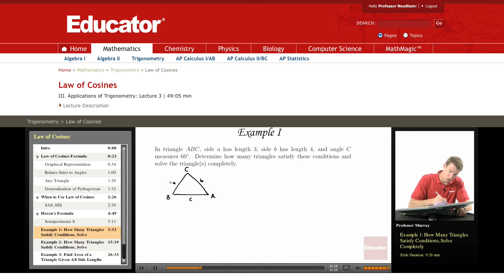And we're given that A equals 3, B equals 4, and angle C measures 60 degrees. And we want to first of all determine how many triangles satisfy these conditions, and then we want to solve the triangles completely.